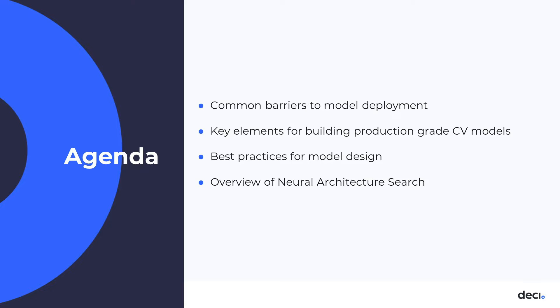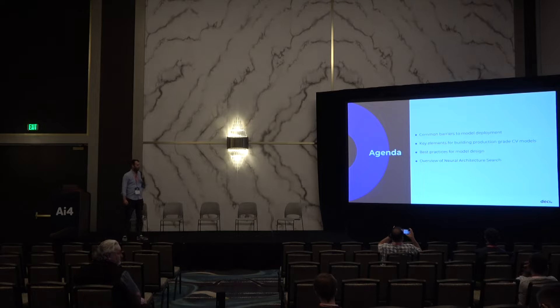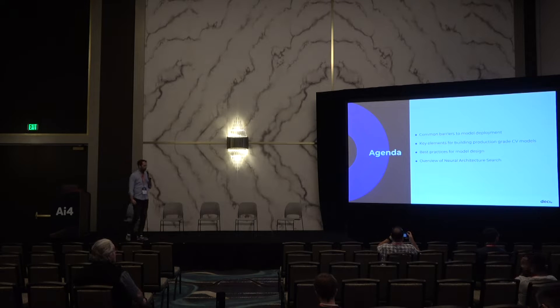That's what we're going to cover — some best practices on model design and how we can leverage neural architecture search in order to build better models for computer vision, to reach production faster and achieve shorter development cycles.